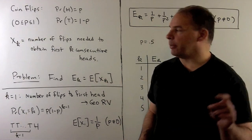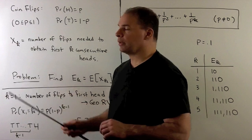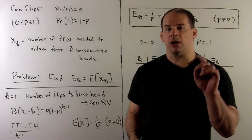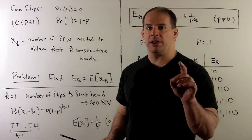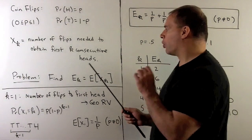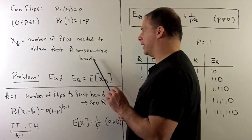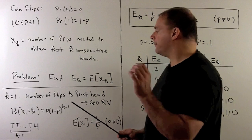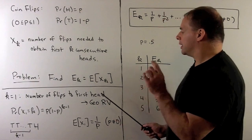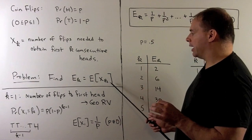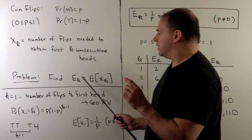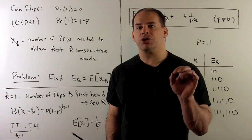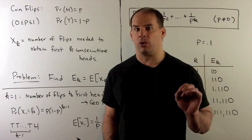We consider the random variable x sub k. So x sub k is going to take one of our sequences — it will return the number of flips that it takes to obtain the first run of k consecutive heads. Our problem: I want to find e sub k, the expected value of x sub k — the average number of flips to get the first run of k heads in a row.